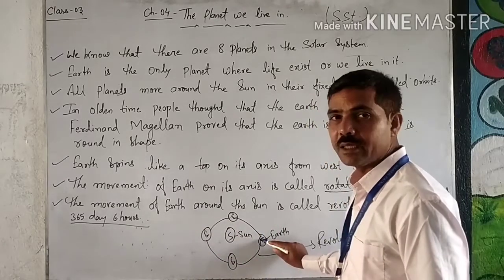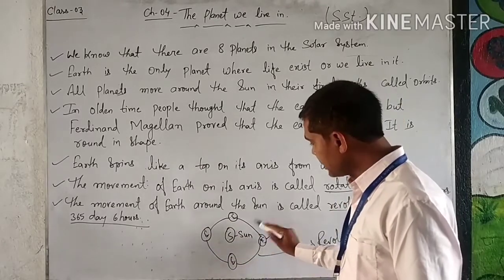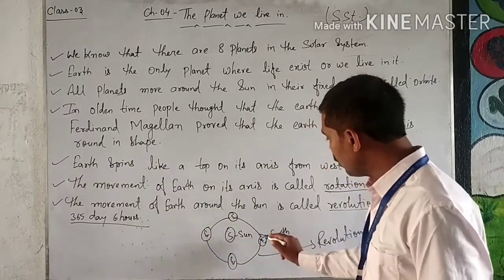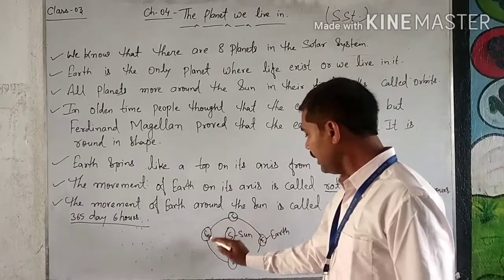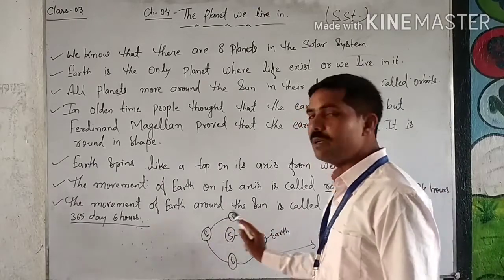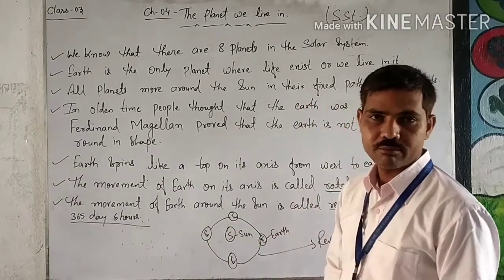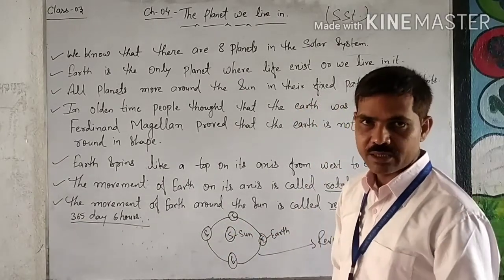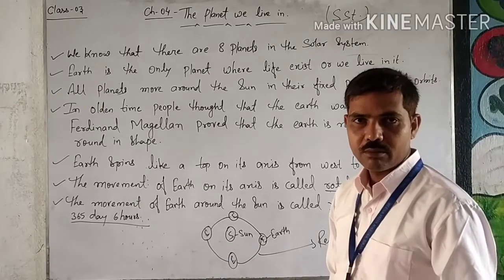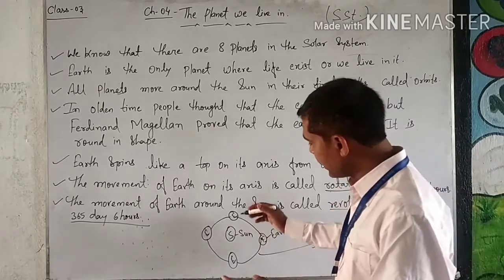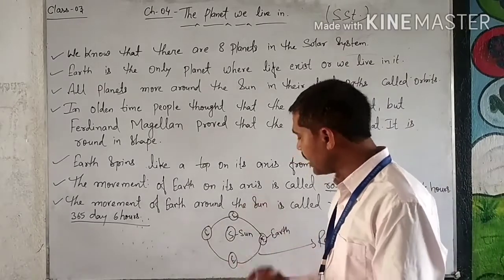Because of this revolution around the Sun, season changes happen in the world. When the Earth comes closer to the Sun, the season changes.